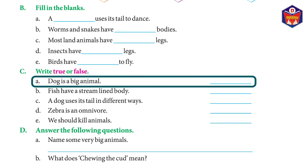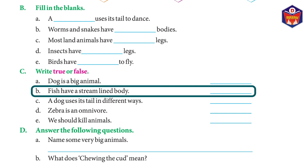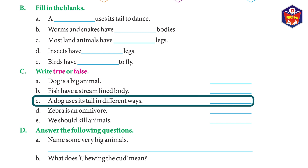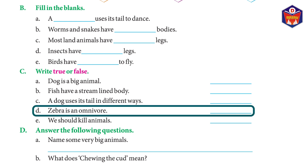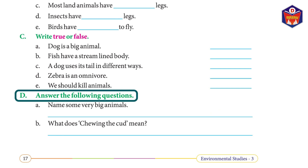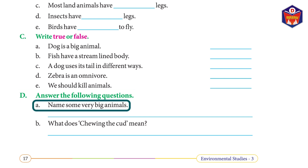True or false: (a) A dog is a big animal — False. (b) Fish have a streamlined body — True. (c) A dog uses its tail in different ways — True. (d) Zebra is an omnivore — False. (e) We should kill animals — False. Answer the following: (a) Name some very big animals — Answer: rhinoceros, lion, tiger, hippopotamus.